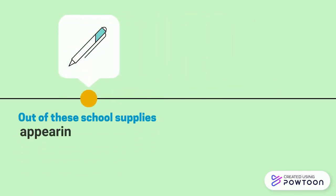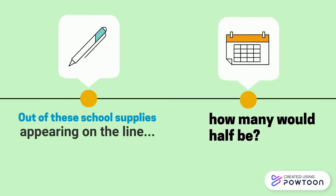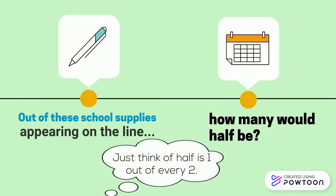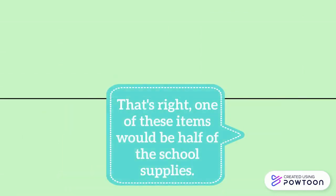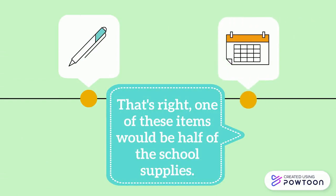Out of these school supplies appearing on the line, how many would half be? Just think of half as one out of every two. That's right — one of these items would be half of the school supplies.